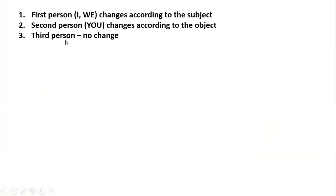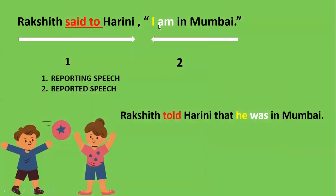Here are the pronoun rules: first person — 'I' and 'we' — changes according to the subject. Second person — 'you' — changes according to the object. Third person — there is no change at all. So first person changes according to the subject, second person changes according to the object.